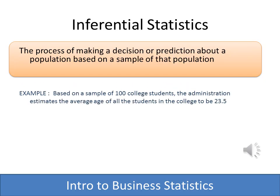Inferential statistics is where we're headed in the second half of the book. That's the process of making predictions or decisions about a population based on a sample of that population. For example, if I were to survey 100 college students, I could decide based on my sample that the average age of the student at the whole college might be 23.5 — but I've made that inference based on the sample I've taken, not by surveying every member of the population.